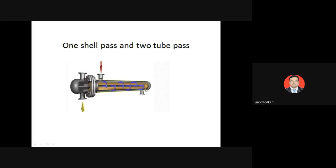Looking at the cut-section view: the tube fluid enters at the left, moves to the right, then back to the left, so there are two tube passes. The shell inlet and outlet are on opposite sides with the fluid flowing over the baffles, giving one shell pass. This is a one shell pass and two tube pass arrangement.